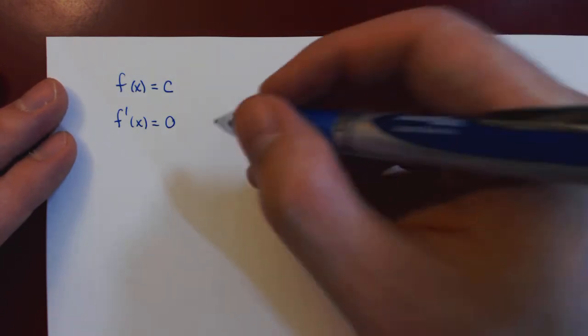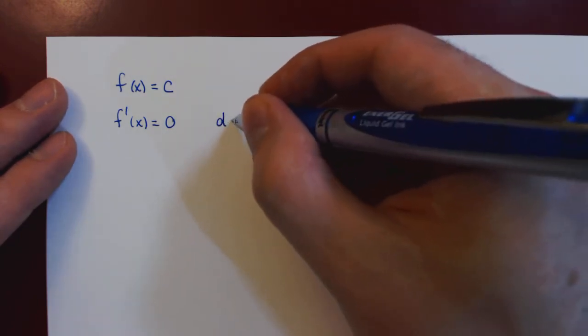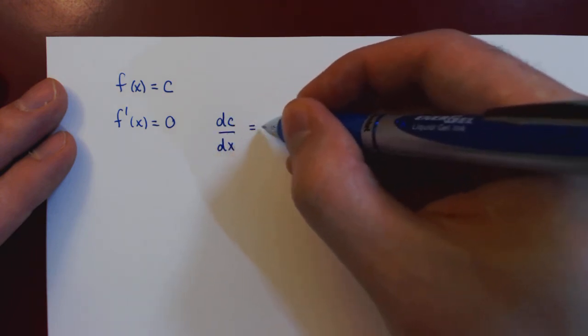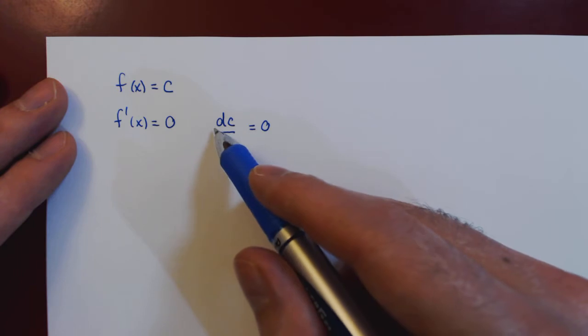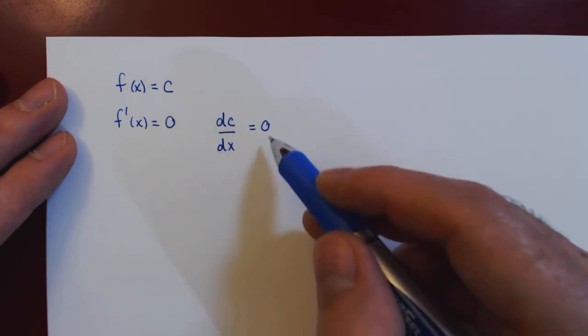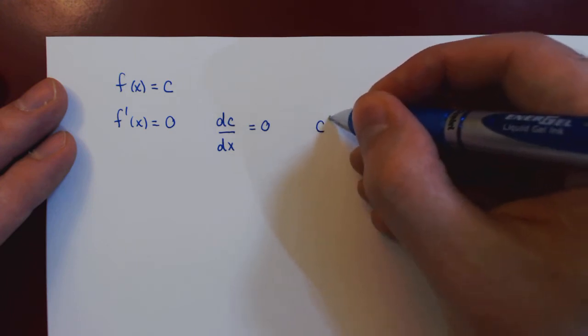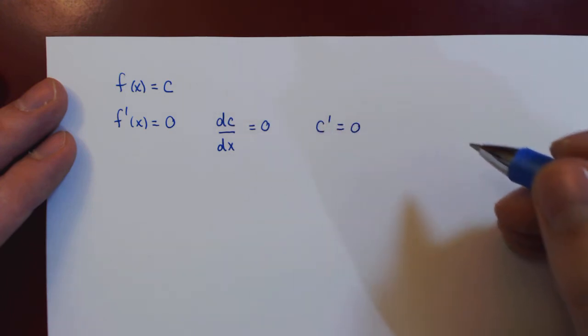We can write this in two different ways. We can say the derivative of c with respect to x is equal to zero. So the derivative of a constant with respect to x is equal to zero. And even more precisely, using the prime notation, c prime is equal to zero.